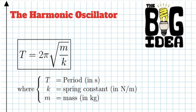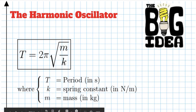The period equals two pi times the square root of the mass divided by the spring constant. Notice the period does depend on mass — making the mass heavier makes T bigger, so it takes longer to complete a cycle. Put this in your toolbox: T is the period, m is the mass, and k is the strength of the spring, usually measured in newtons per meter. Bigger, stronger springs have higher spring constants.